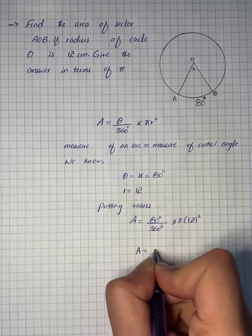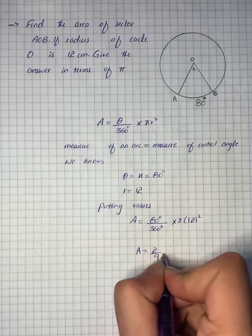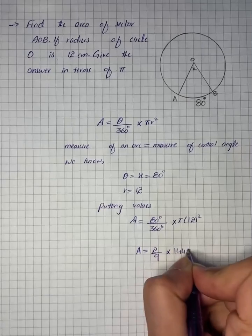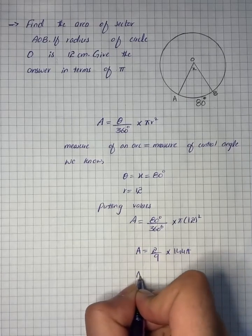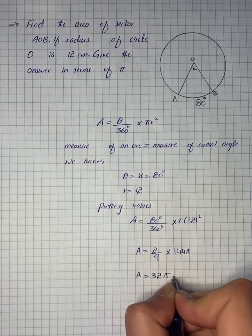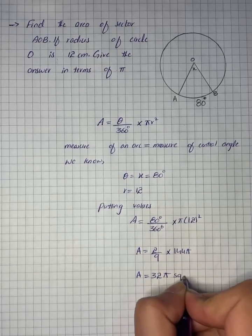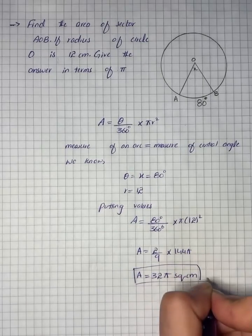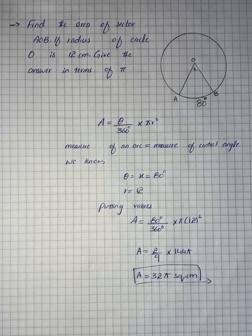Now we will simplify and we will have 2 over 9 multiplied by 144 pi. So A is equal to 32 pi square centimeters. Here we have our answer and it is already written in terms of pi.